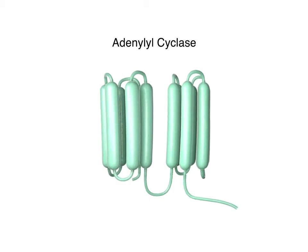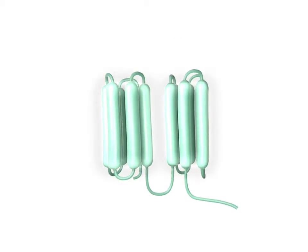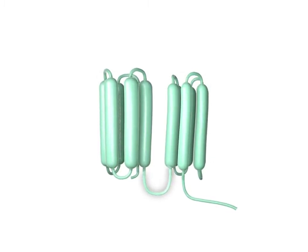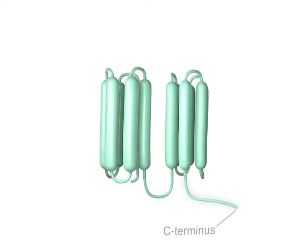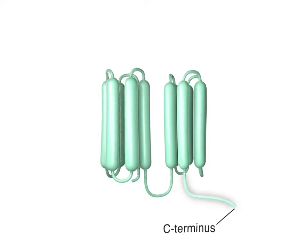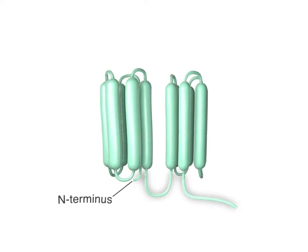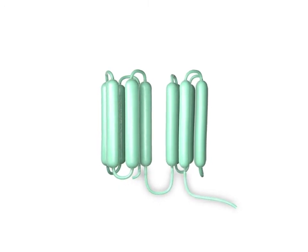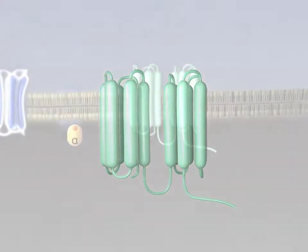These are large proteins with two groups of six transmembrane segments, an intracellular loop connecting these two groups, and a large intracellular C-terminus. Together, the intracellular loop and the C-terminus make up the catalytic domains of adenylyl cyclase.